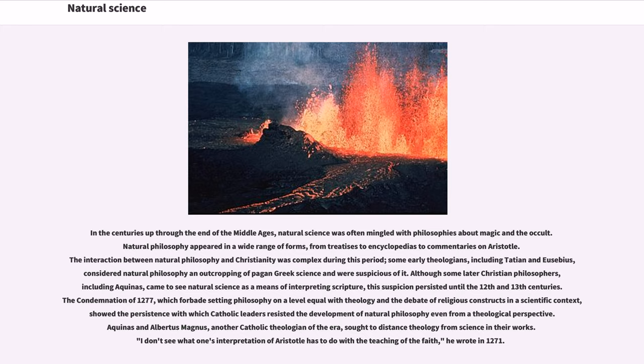Philosophers pondered questions including the existence of a vacuum, whether motion could produce heat, the colors of rainbows, the motion of the earth, whether elemental chemicals exist and where in the atmosphere rain is formed. In the centuries up through the end of the Middle Ages, natural science was often mingled with philosophies about magic and the occult. Natural philosophy appeared in a wide range of forms, from treatises to encyclopedias to commentaries on Aristotle. The interaction between natural philosophy and Christianity was complex during this period. Some early theologians, including Tatian and Eusebius, considered natural philosophy an outcropping of pagan Greek science and were suspicious of it. Although some later Christian philosophers, including Aquinas, came to see natural science as a means of interpreting scripture, this suspicion persisted until the 12th and 13th centuries.